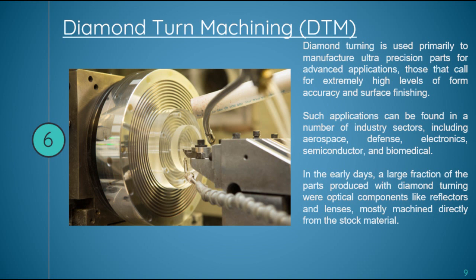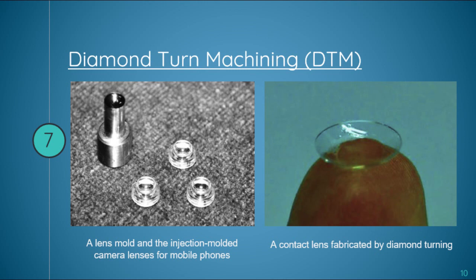Diamond turning is used primarily to manufacture ultra precision parts for advanced applications that call for extremely high levels of form accuracy and surface finishing. Such applications can be found in aerospace, defense, electronics, semiconductors, and biomedical sectors. In the earlier days, a large fraction of parts produced with diamond turning were optical components like reflectors and lenses, mostly machined directly from the stock material.